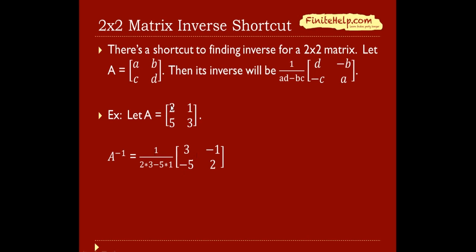And then here for this matrix, we have a and d switching positions, so the 3 and 2 switch positions. And then b and c, 1 and 5, becomes negative. So here 3, negative 1, negative 5, and 2 is the inverse of A.